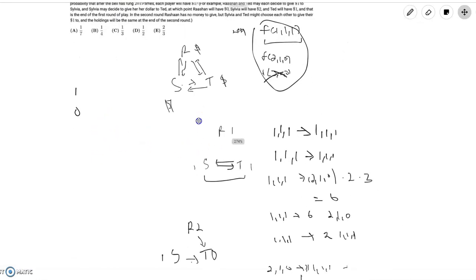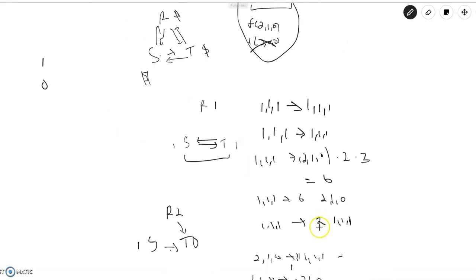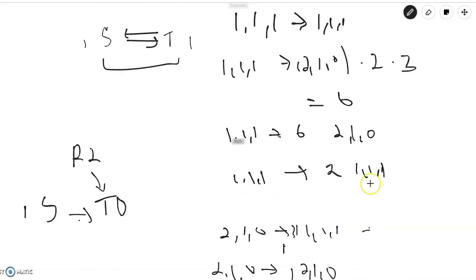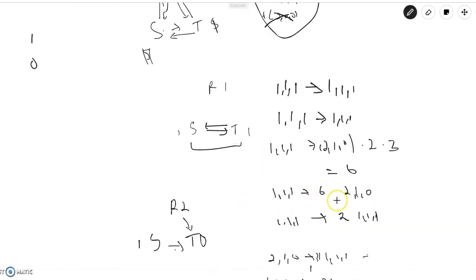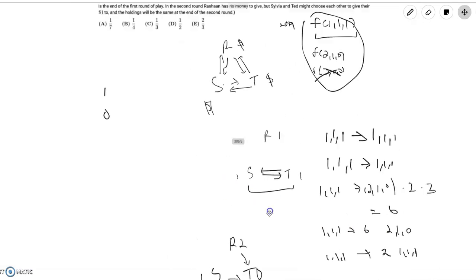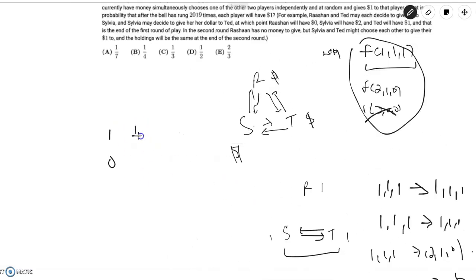After one round, there's basically two out of the eight ways from one one one to go to one one one, and there's six out of the eight ways for one one one to go to two one zero. So now the probability is one fourth and two one zero is equal to three fourths. Put it over here.